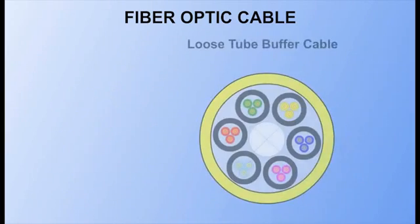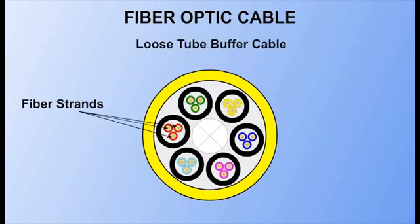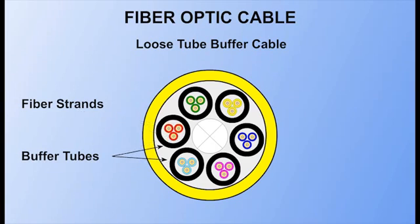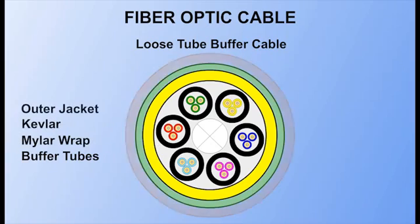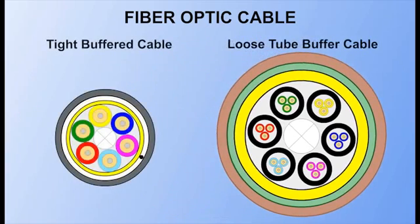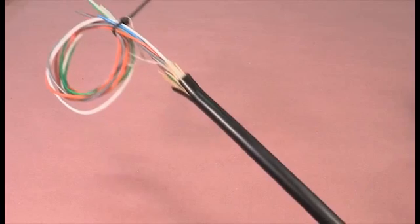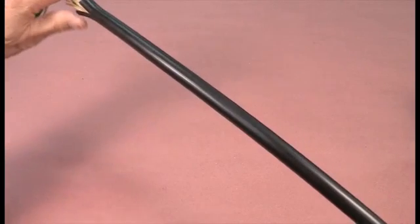In loose buffer cables, the fiber strands are contained within buffer tubes, allowing the strands to move freely while also providing additional protection for the strands. The addition of buffer tubes and other protective layers causes the cable diameter to be larger and the cables to be less flexible.